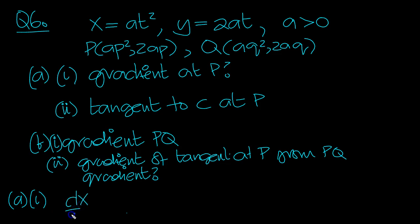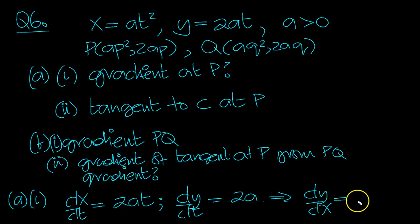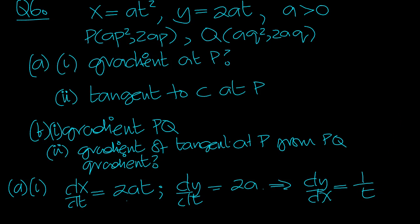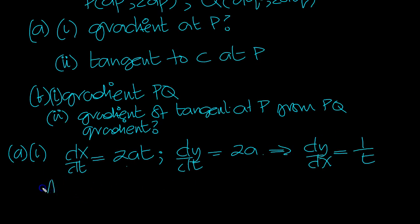So, dx/dt is equal to 2at, and dy/dt is equal to 2a. So, dy/dx then equals this divided by that, so it's 1 over t. The 2a's will cancel. At P, dy/dx when t is equal to the parameter P, it's 1 over P.